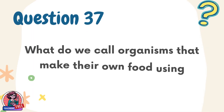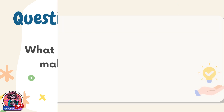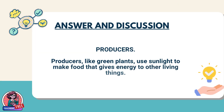Question 37. What do we call organisms that make their own food using sunlight? Answer: Producers. Producers, like green plants, use sunlight to make food that gives energy to other living things.